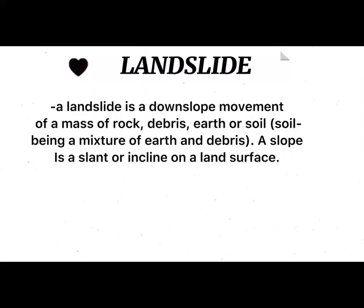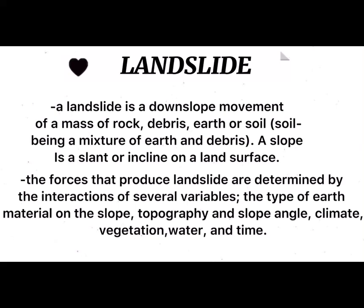A landslide is a downslope movement of a mass of rock, debris, earth, or soil — soil being a mixture of earth and debris. A slope is a slant or incline on a land surface. The forces that produce landslides are determined by the interaction of several variables: the type of earth materials on the slope, topography and slope angle, climate, vegetation, water, and time. Landslide is also defined as a type of mass wasting, which denotes any downslope movement of soil and rocks under the direct influence of gravity.